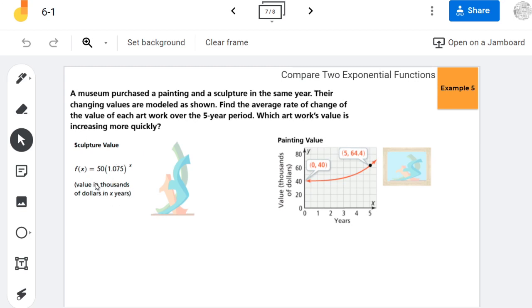The goal of today's video is to compare two exponential functions. So what we're comparing is an actual written equation and then we're going to compare a graph. The museum purchased a painting and a sculpture in the same year.